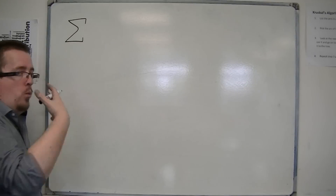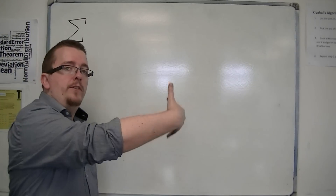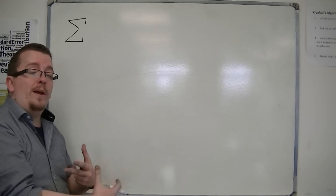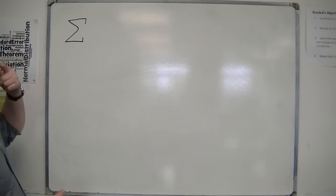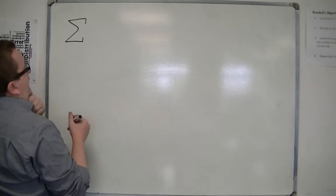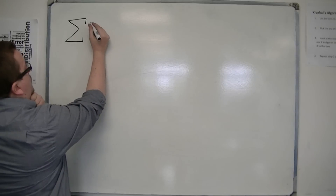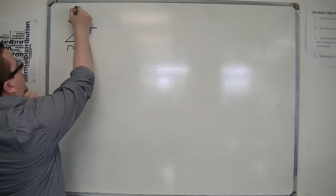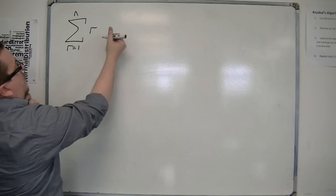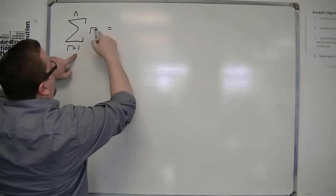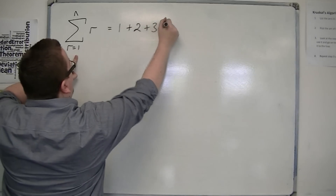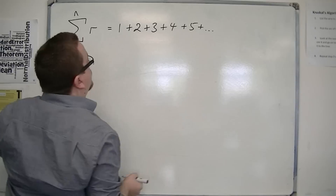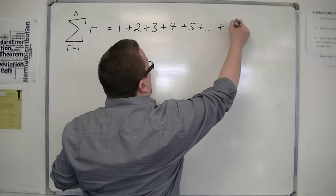The natural numbers are 1, 2, 3, 4, 5, 6, 7, and so on. The first n natural numbers could be represented by sigma of r, where r goes from 1 to n. This represents 1 plus 2 plus 3 plus 4, and so on, up to n.